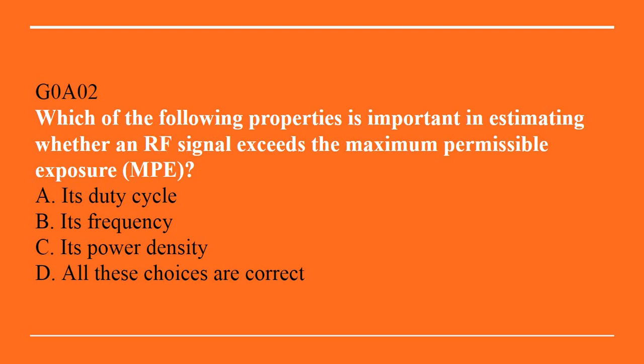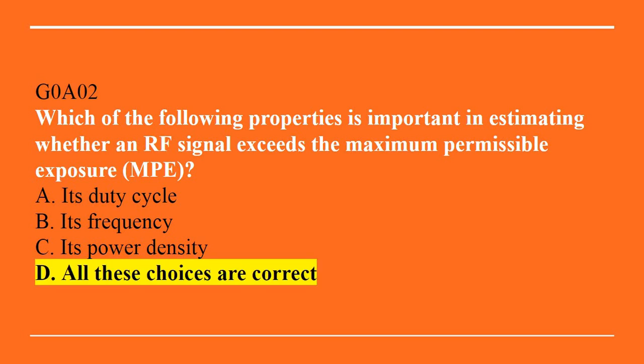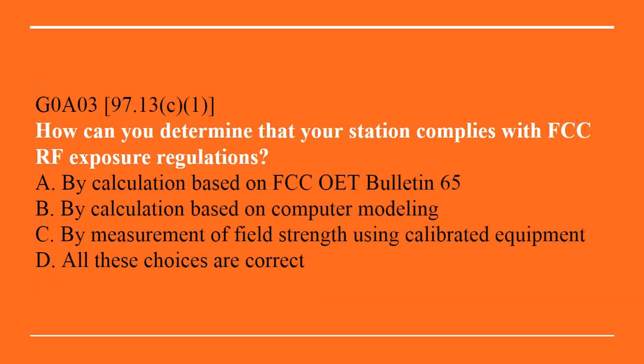G0A02: Which of the following properties is important in estimating whether an RF signal exceeds the maximum permissible exposure? A, its duty cycle. B, its frequency. C, its power density. Or D, all of these choices are correct. Correct answer is D — all of these choices are correct.